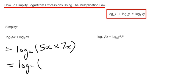We just need to simplify it now. 5x times 7x will give us 35x squared. And that's our final answer.